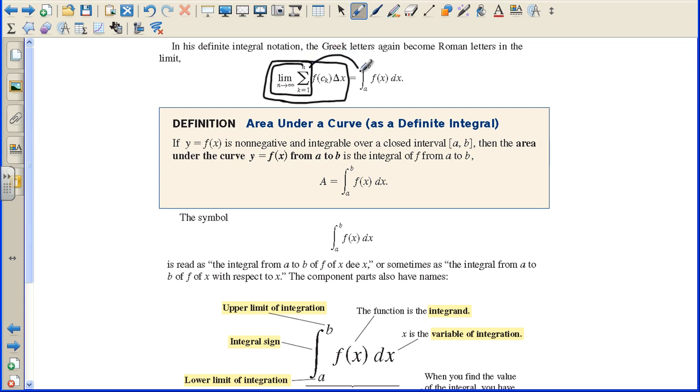In this definite integral notation, the Greek letters become Roman letters in the limit. This is the Greek way to do this. We have the limit as N approaches infinity from K equals 1 to N, and all of that, that's really summation, summing up an infinite amount of rectangles. Well, that turns into the elongated S that the Romans used. So here's an S, and if you stretch it out, it looks something like that. This is the integral sign from A to B of f of x dx.